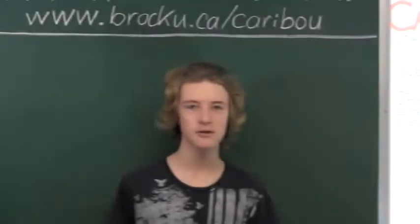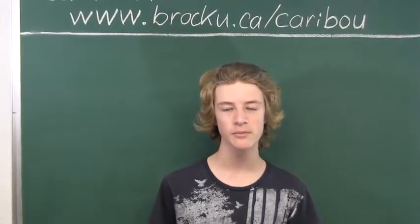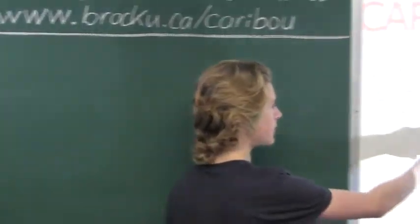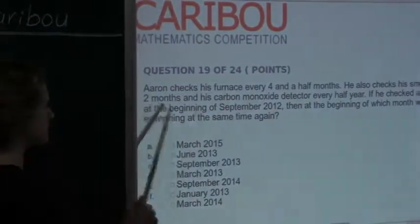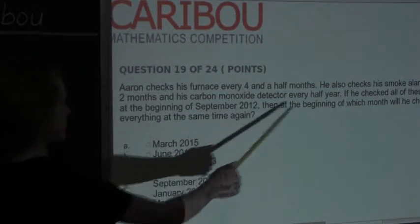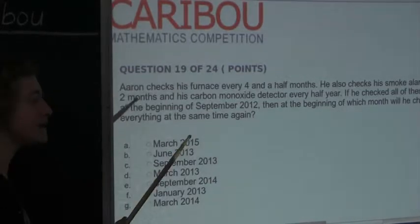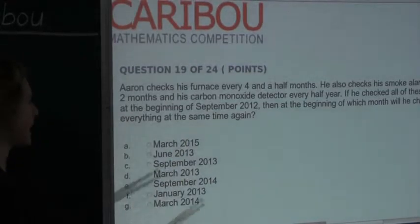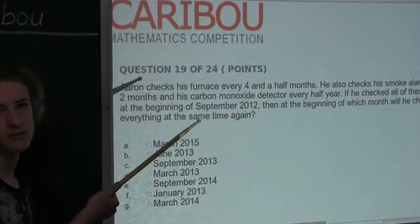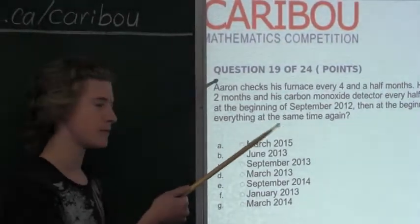So in order for these three checkups to happen again at the same time, the time interval must be a common multiple of four and a half months, two months, and six months. Since two months and six months are whole numbers, we cannot have any odd multiples of four and a half months, because then they would be decimals and we do not need that. We need whole numbers.